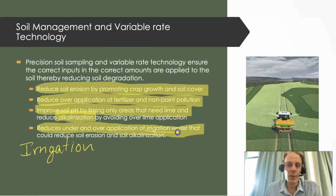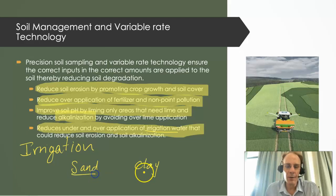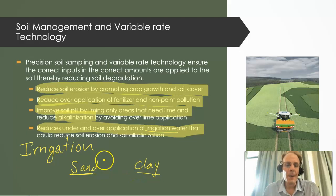For example, if I have sandy areas and clay areas in the field, the sand areas need more water than the clay areas. Applying more water to the sand areas results in better crop growth, and early in the growing season we may want to irrigate more frequently in the sand area than the clay area. By applying the right amount of irrigation water at the right time and in the right place, we can reduce soil erosion and reduce the potential of soil alkalinization.